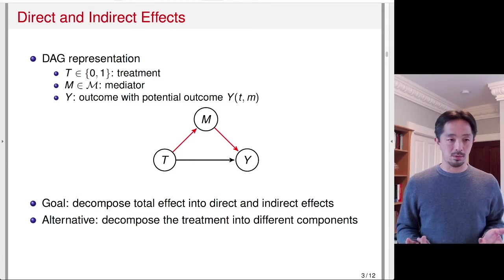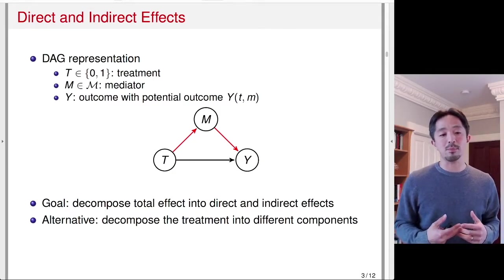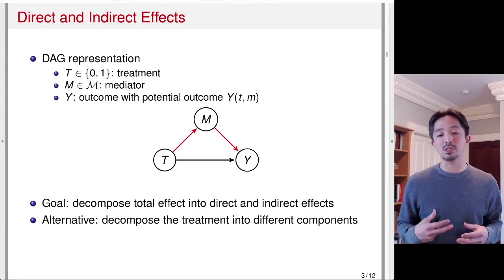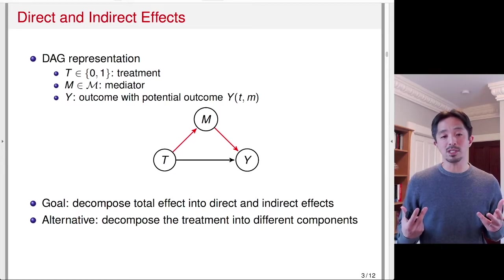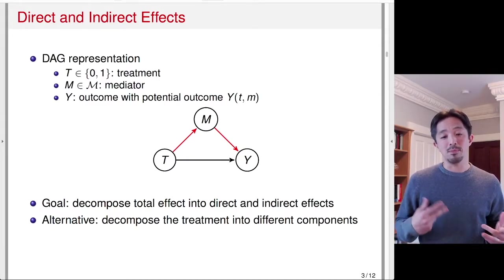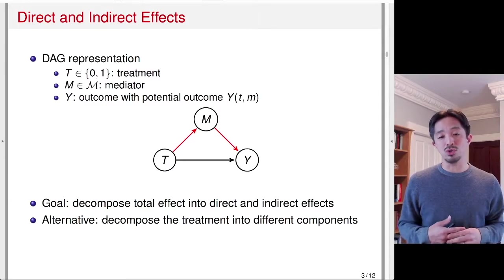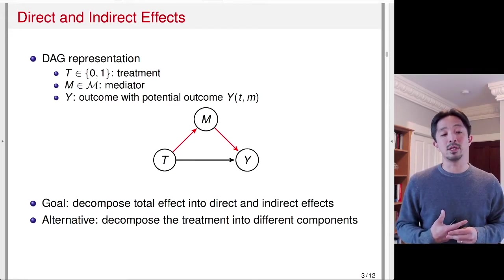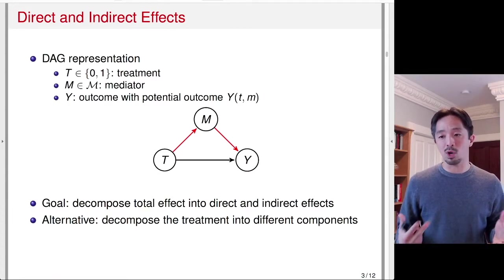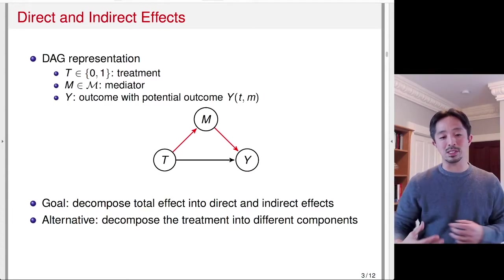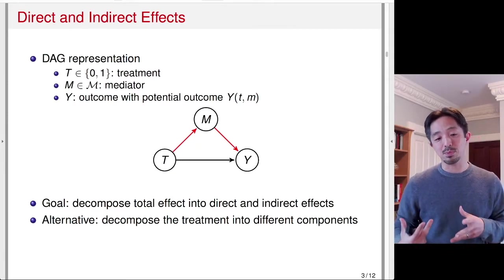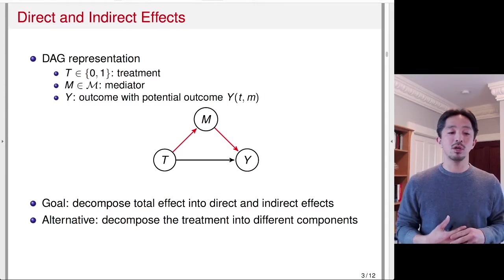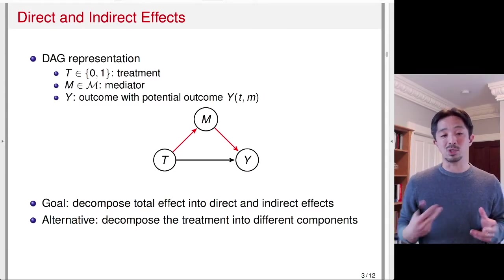An alternative way to think about causal mechanisms is to decompose the treatment into different components. Oftentimes a particular policy may be composed of a variety of different aspects. For example, an educational program may be decomposed into how the teacher is trained, the particular textbook being used, or the particular topics covered in classrooms. When you ask why this educational program worked, you might ask: is it the teacher training, the textbook, or the topics covered? Which one or which combination of those factors is really playing a role?